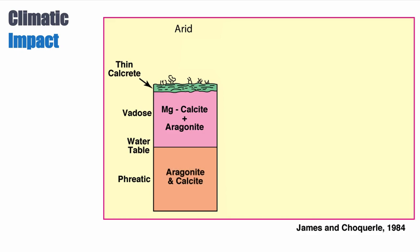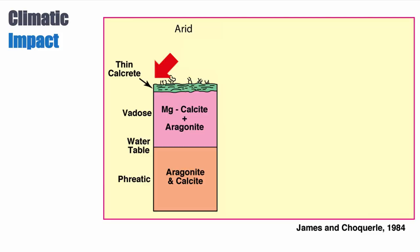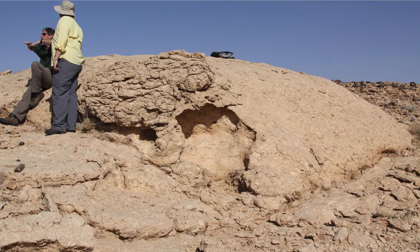In the vadose zone, we can preserve magnesium calcite, aragonite, and any calcite that would have been precipitated. The point is, we have so little diagenesis that these things are preserved. At the surface, we have evaporation, but because we don't have a lot of water in the system, we form a calcrete — a cement zone due to evaporation — but this calcrete is pretty thin. For an example, we can look at Saudi Arabia.